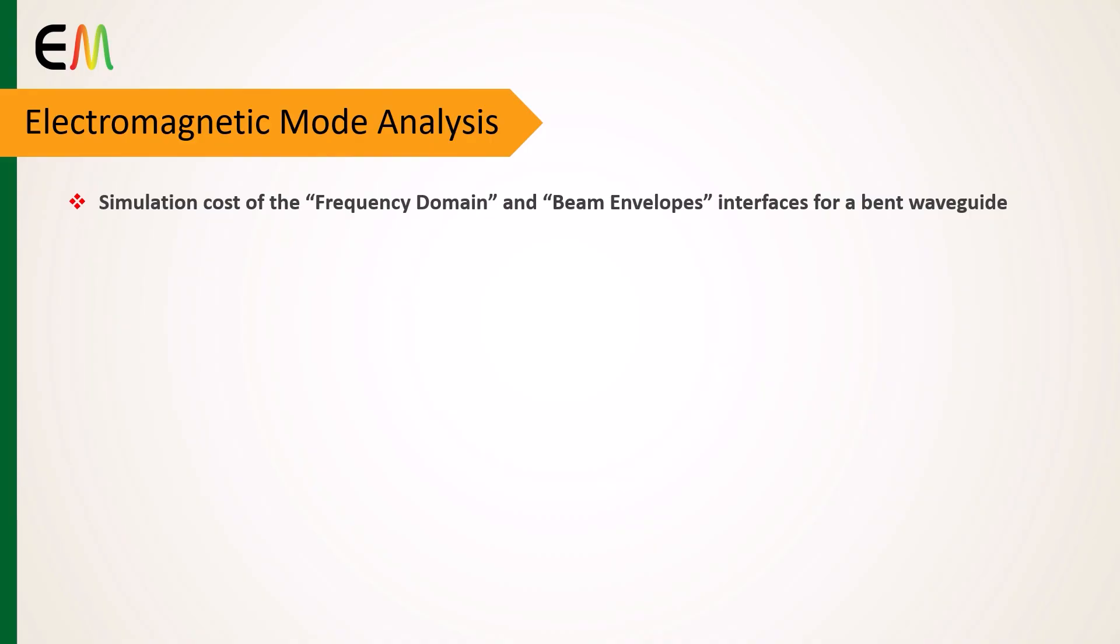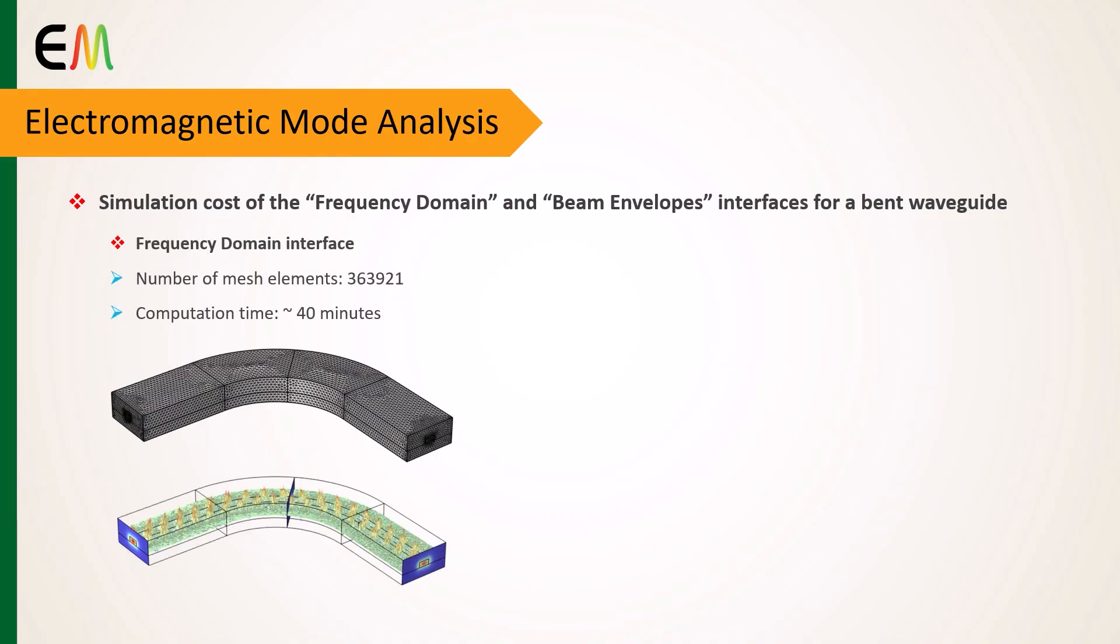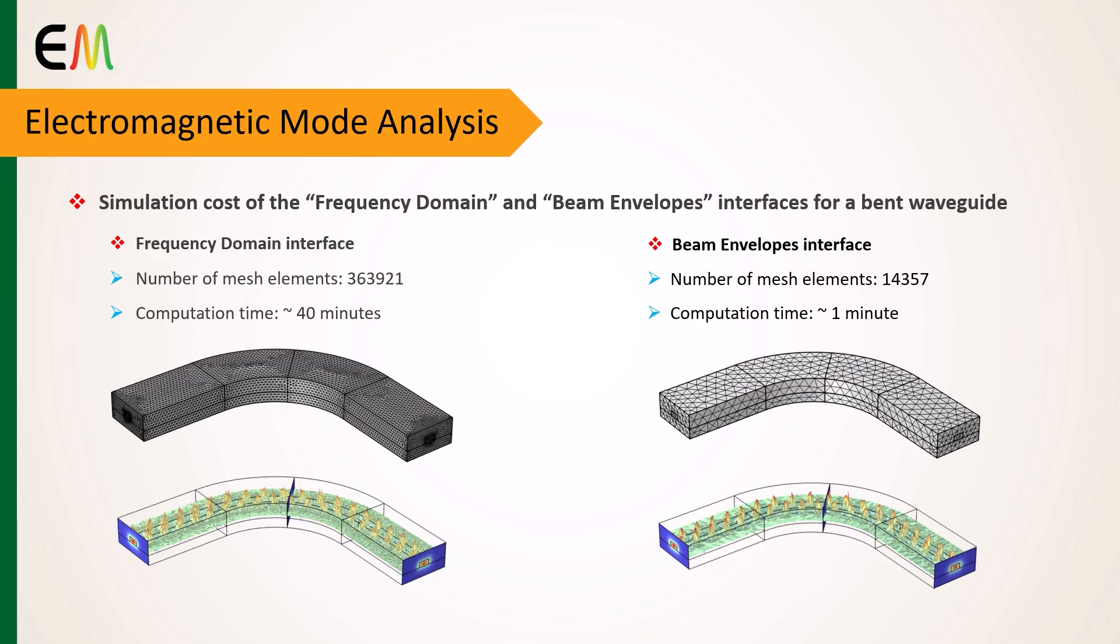As an example, we compared the two interfaces in the simulation of a bent waveguide. To achieve the same results with each interface, the frequency domain interface requires more than 25 times the number of mesh elements and takes about 40 times longer to simulate compared to the beam envelopes interface.